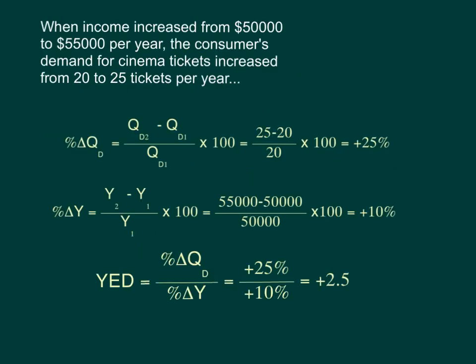Here's a numerical example. When a consumer's income increased from $50,000 to $55,000 per year, this consumer's demand for cinema tickets increased from 20 to 25 tickets per year. To calculate the percentage change in quantity demanded, we take the new quantity, which is 25, minus the old quantity, which is 20, divided by 20, times 100.